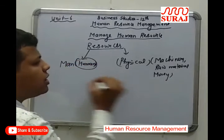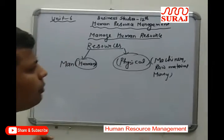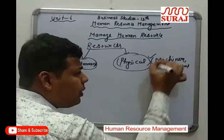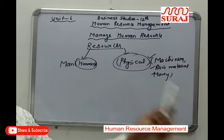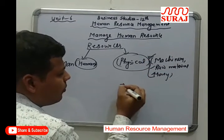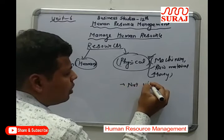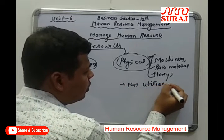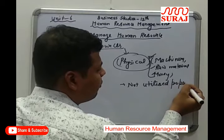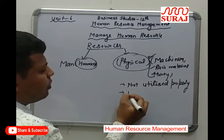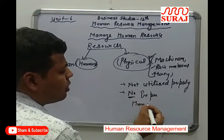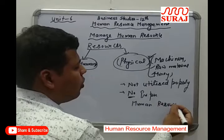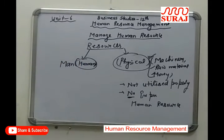In a business organization, various physical resources — machinery, raw material, and money — are available in large amounts. However, these resources are not utilized properly if there is no proper human resource in the business organization. Manpower is known as the human resource.